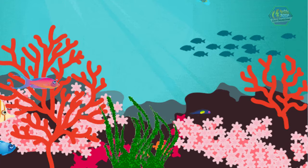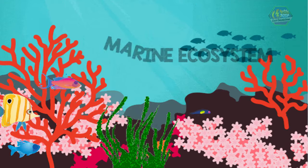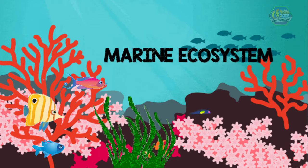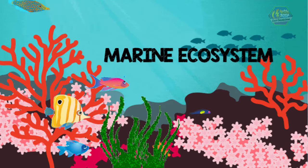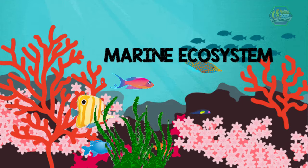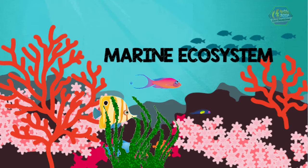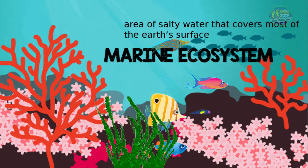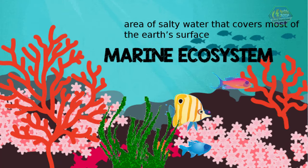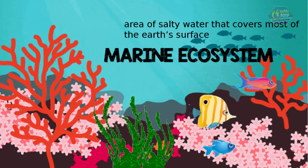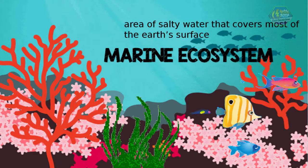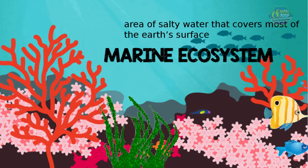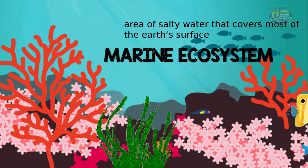The marine ecosystem, or the ocean, is an area of salty water that covers most of the earth's surface, and there are millions of different plants and animals living inside.